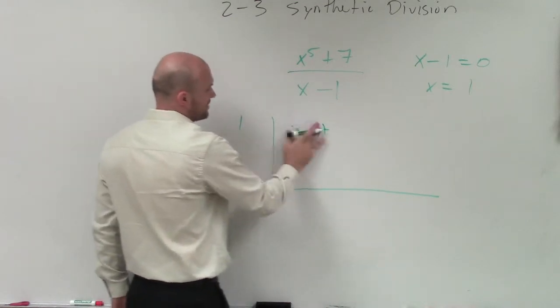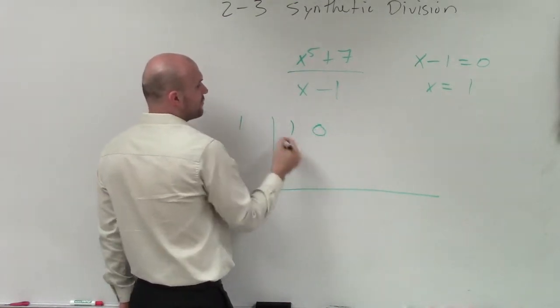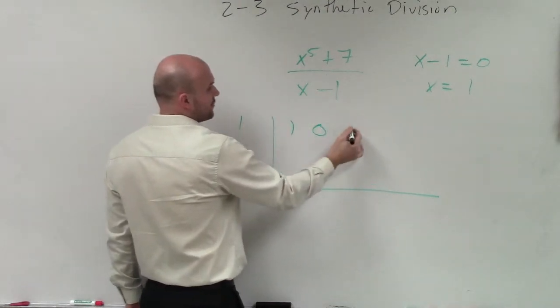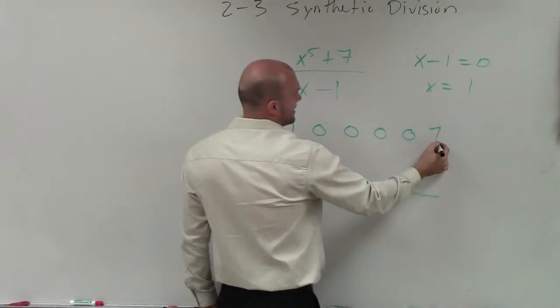So what I need to do, when I'm writing my x to the fifth, we need to make sure we include our coefficients for x to the fifth, x to the fourth, x cubed, x squared, our linear x, and then seven.